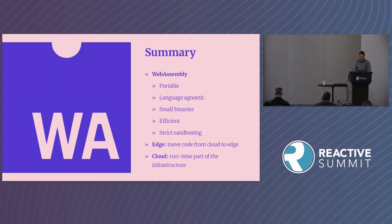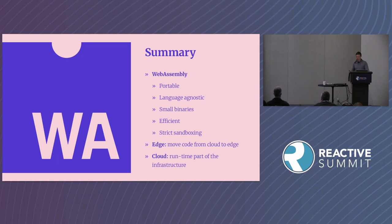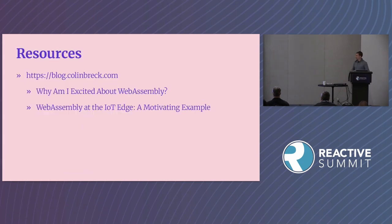To sum up: WebAssembly is portable, language agnostic, produces small binaries, is efficient, and has a really great strict sandboxing model. WebAssembly can provide a competitive advantage by enabling faster iteration and allowing code to move between the cloud and the edge. It also allows us to abstract more and more of what's embedded in our binaries today down into the infrastructure. If you think this idea is interesting or crazy, please come talk to me. If you want this in written form, my blog has two articles summarizing what I've talked about here, with links to different resources on the subject.